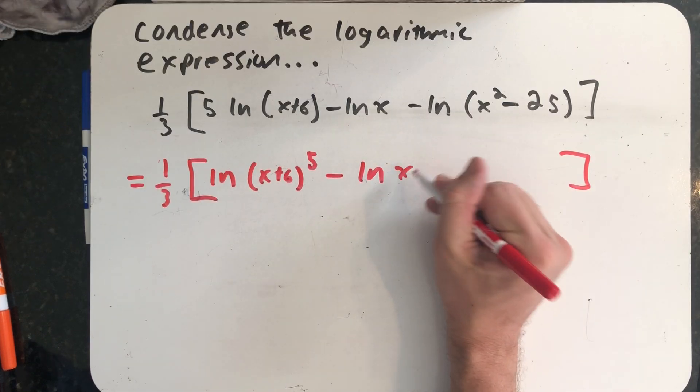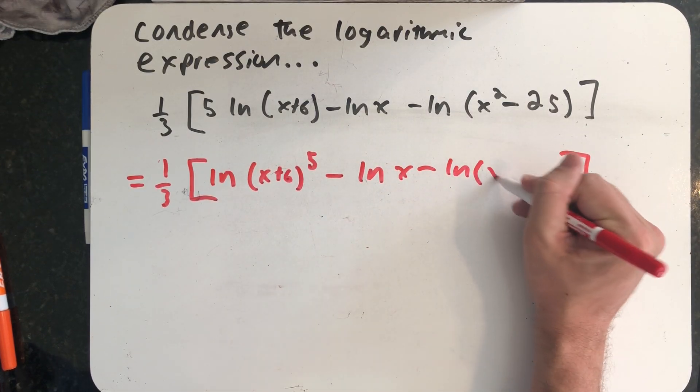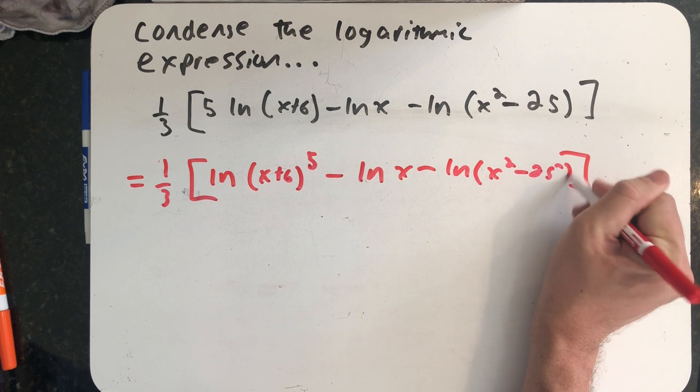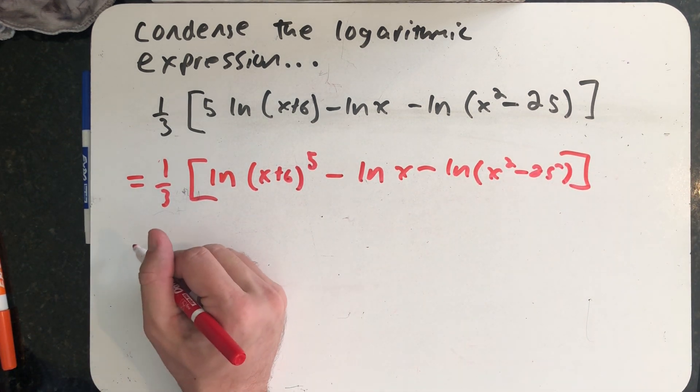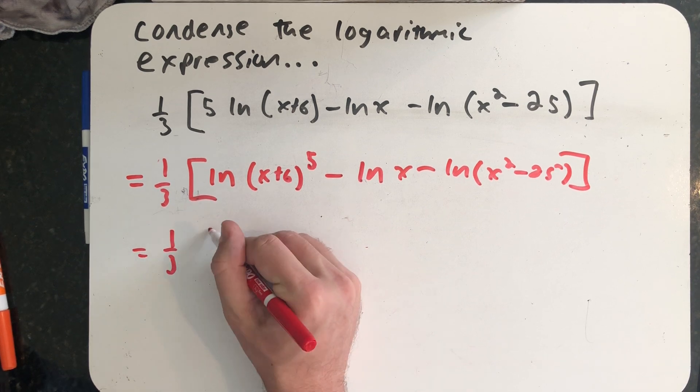Minus the natural log of x minus the natural log of x squared minus 25. So now I'm going to use the sum and difference properties of logarithms to write that as a single natural log.